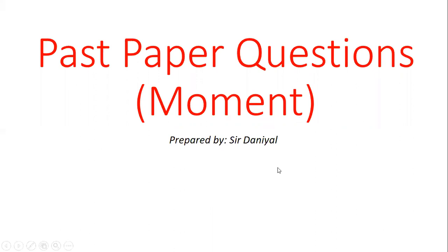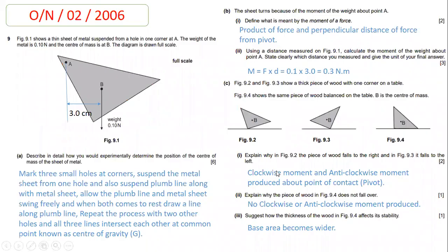The first question is from October-November, paper 2, 2006. In this question, the examiner says that there is a thin sheet of metal suspended from a hole in one corner at A. The weight of the metal sheet at point B is 0.10 Newton acting downward, because point B is the center of mass of the metal sheet. This is a full scale diagram. In part A, the examiner asks you to describe in detail how you would experimentally determine the position of the center of mass of the sheet of metal.